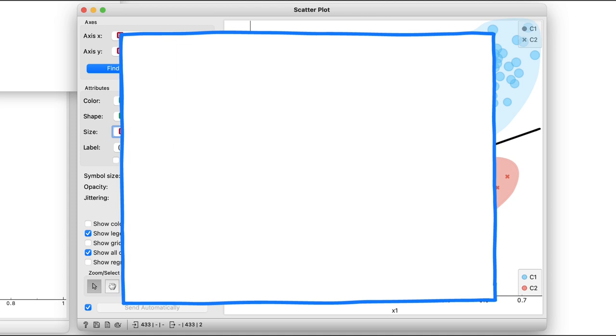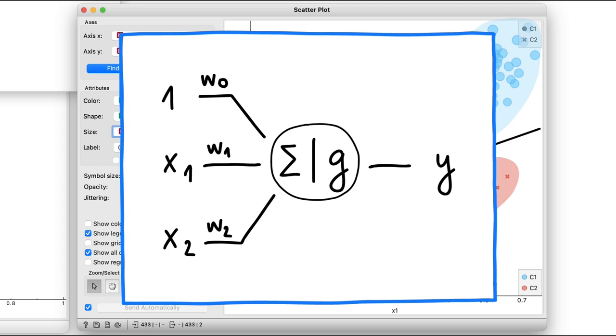Now let me schematically represent the inner workings of our logistic regression. For our two-dimensional data set, logistic regression receives a constant of 1 and features x1 and x2.